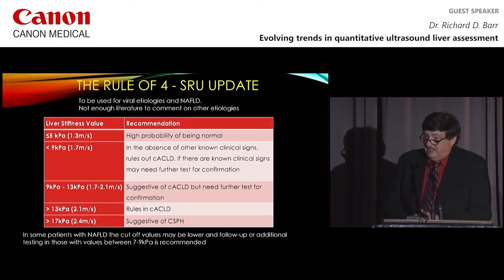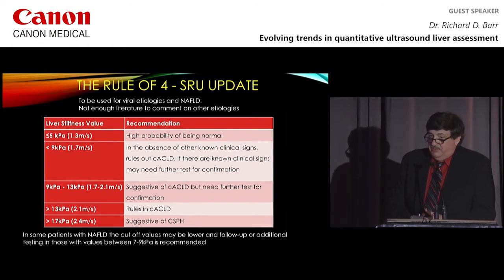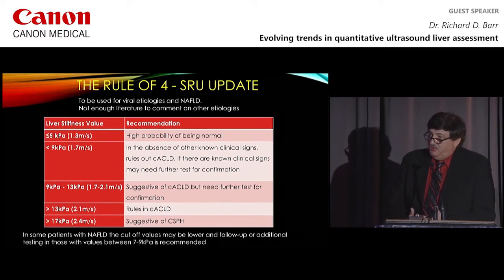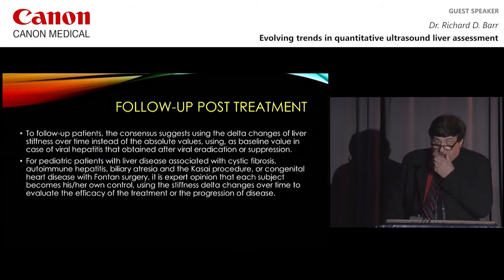We came up with a new table that advances the SRU guidelines and provides a nice, easy guideline for clinical evaluation. We recommend these for viral etiologies and NAFLD, though we don't have enough information for other etiologies. Less than 5 kilopascals: high probability of being normal. Between 5 and 9 kilopascals, in the absence of other known clinical signs, rules out cACLD; if there are known clinical signs, may need further testing. Between 9 and 13 kilopascals: suggestive of cACLD, needs further testing. Greater than 13 kilopascals rules in cACLD. Greater than 17 kilopascals is highly suggestive of clinically significant portal hypertension. For NAFLD patients, additional testing between 7 and 9 kilopascals may be appropriate.